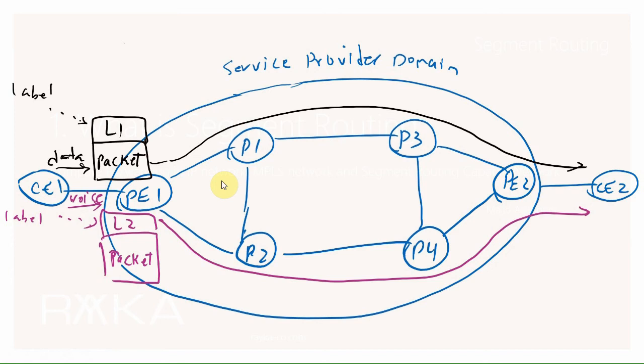This is the advantage of MPLS, which makes it possible to isolate the data plane from the control plane. For example, if we add label L1 above the packet, all routers in the path will know the packet must be forwarded via the above path. And if we add label L2, all routers in the path will know the packet must be forwarded via the below path. The advantage of MPLS over IP is that we can easily route voice and data traffic through different paths depending on their quality of service requirements.